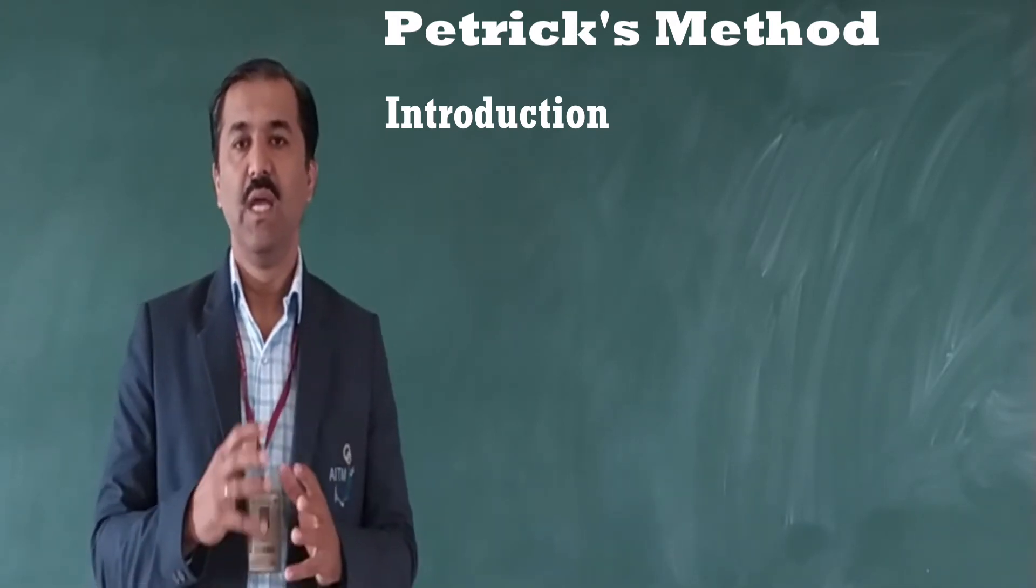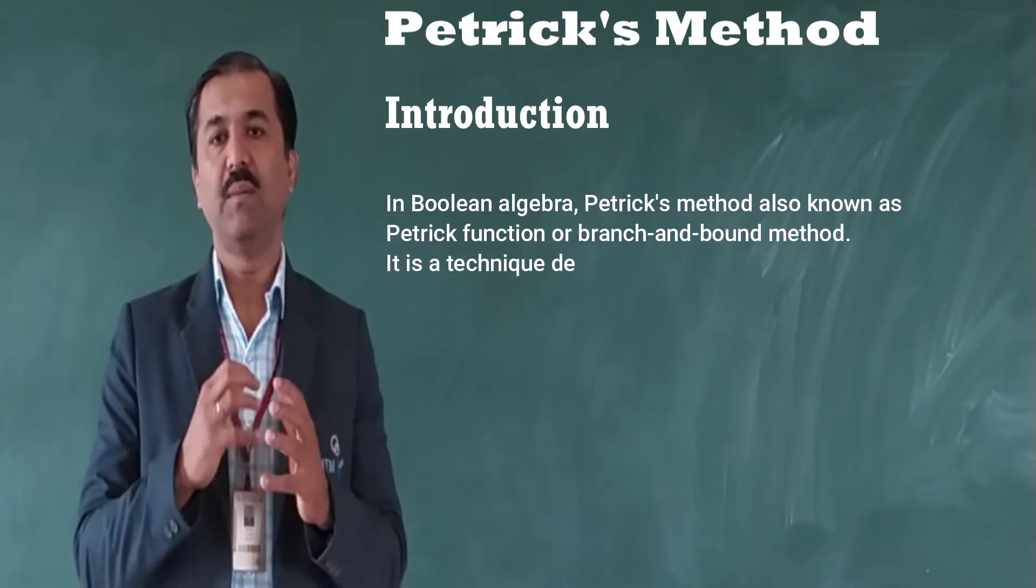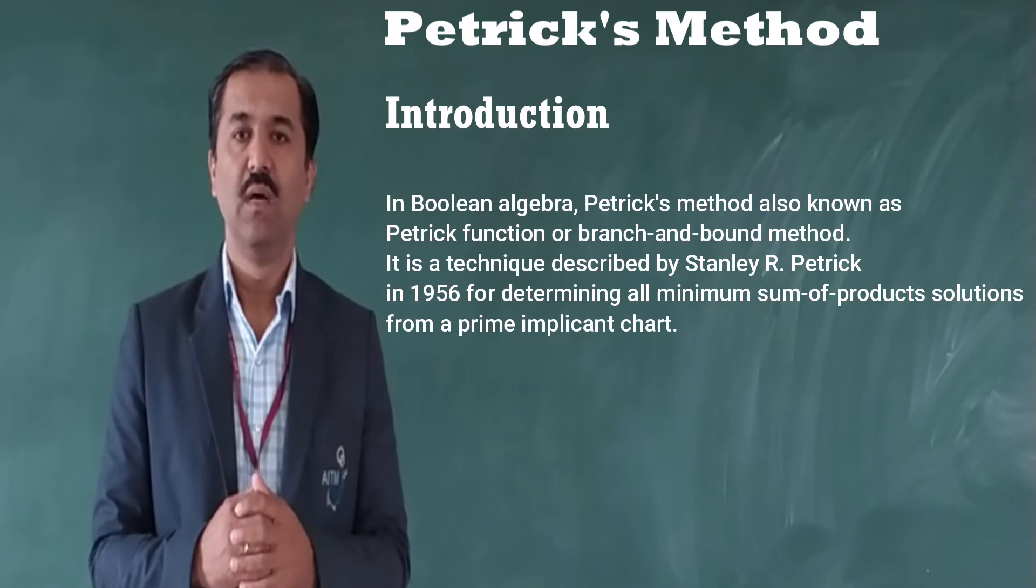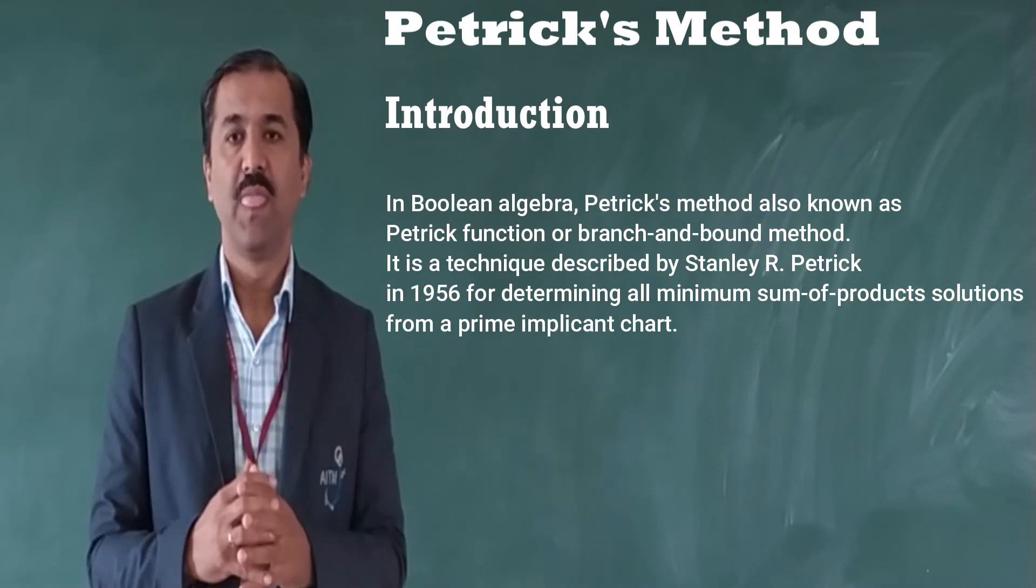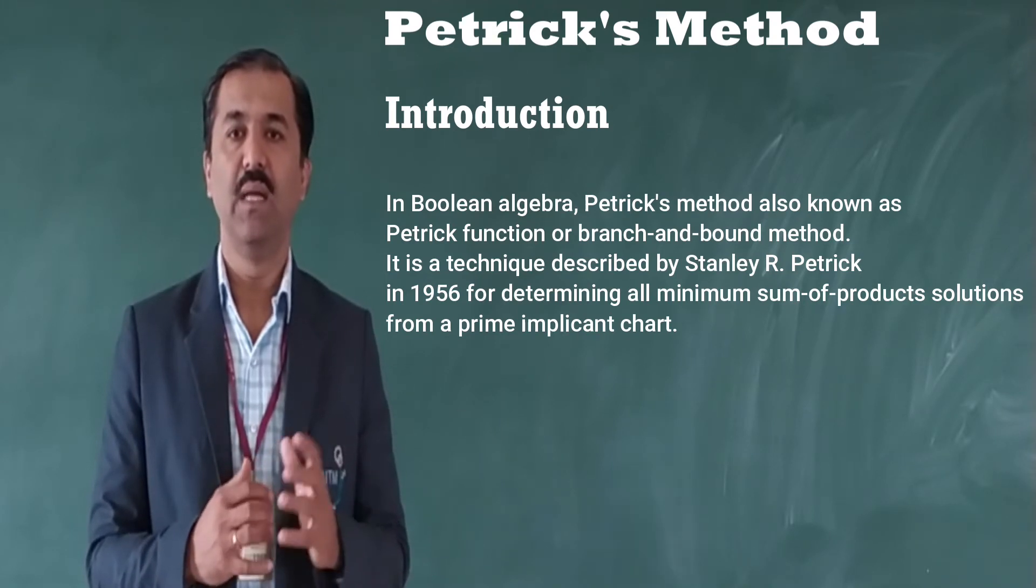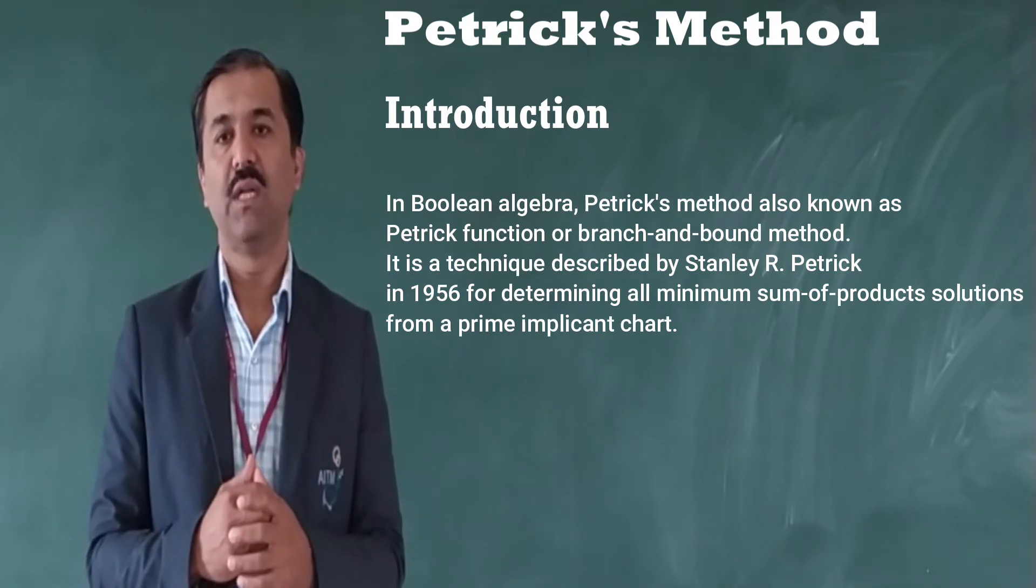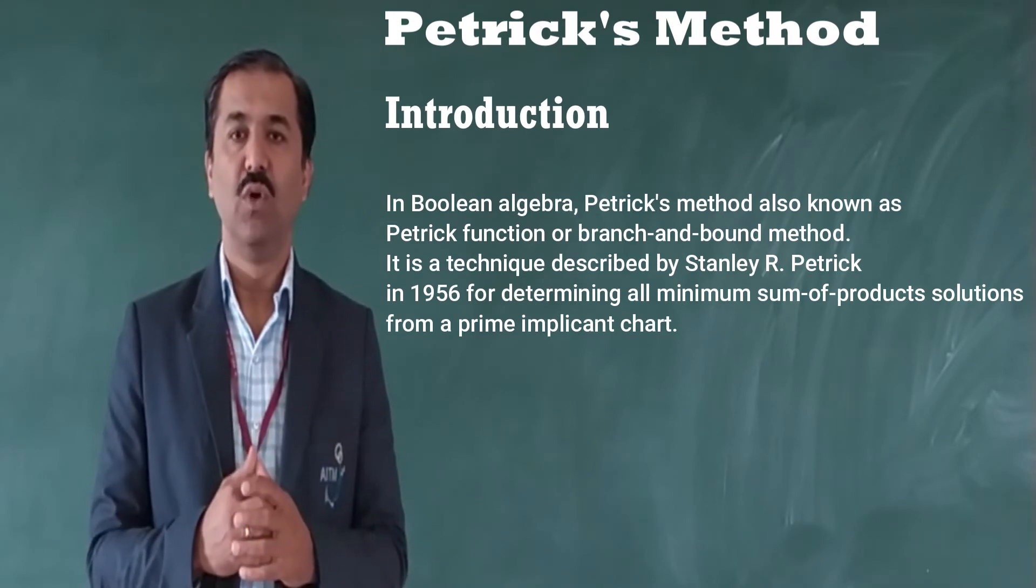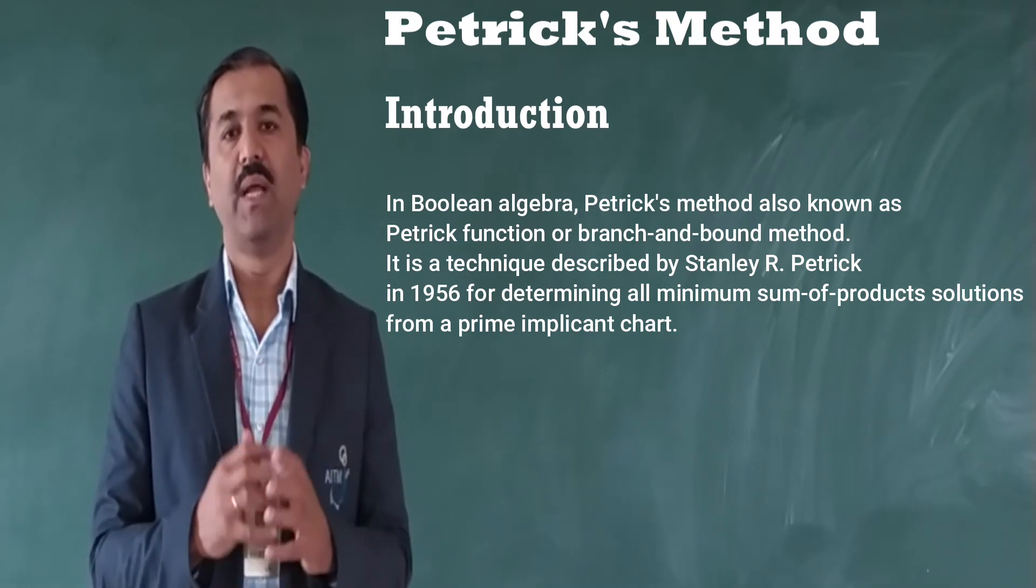So what exactly is Petrick method? In boolean algebra, Petrick method, which is also known as Petrick function or branch and bound method, is a technique described by Stanley R. Petrick in 1956 for determining all minimum sum of products solution from a prime implicant chart.